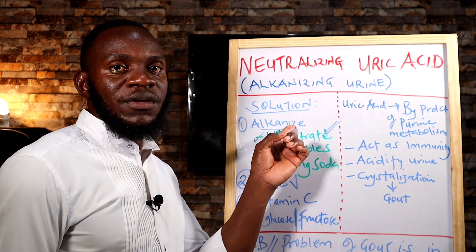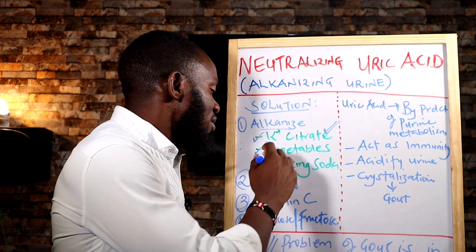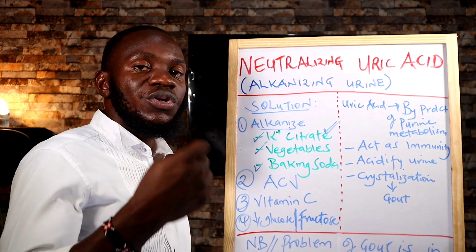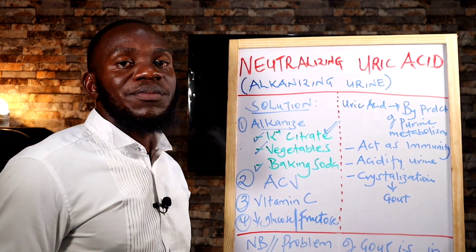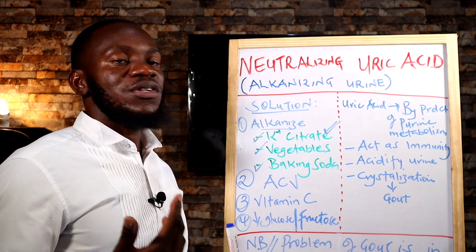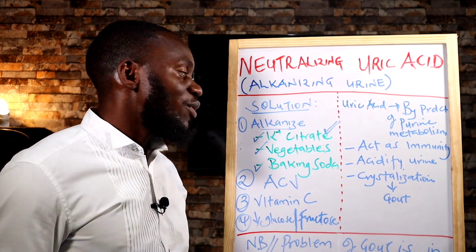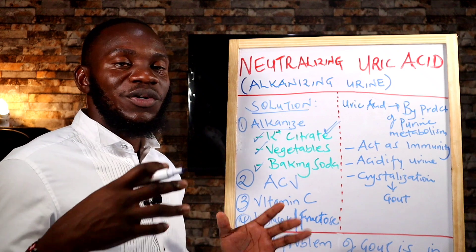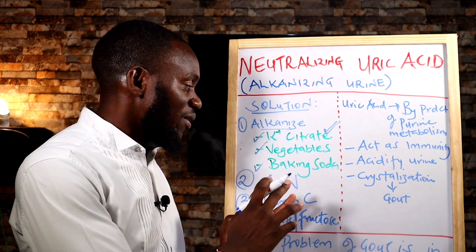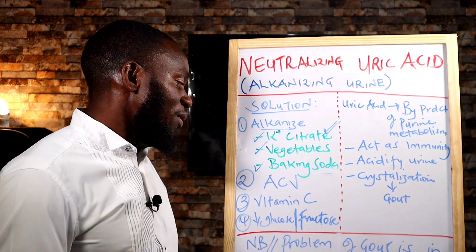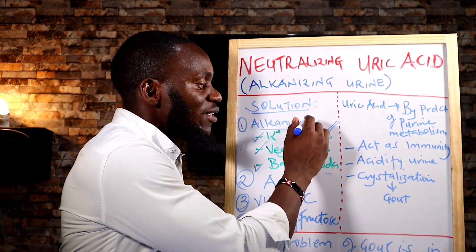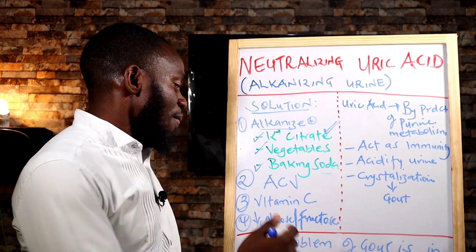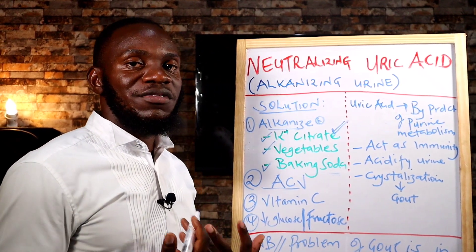Baking soda is a basic compound that can also help alkalize urine. You can use it for brushing your teeth — dissolve it in water rather than applying it directly to teeth. In this channel we're already moving away from commercial toothpastes toward salt, activated charcoal, and baking soda. So those three — baking soda, vegetables, and potassium citrate — are the tools for alkalizing urine.